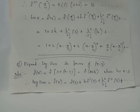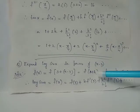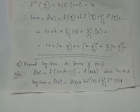To expand log sin x in powers of (x - 3), we have f(x) = log sin x, which can be written as f(3 + h) where h = x - 3. Applying the Taylor series, we get f(3 + h) = f(3) + h·f'(3) + h²/2! · f''(3) + etc.